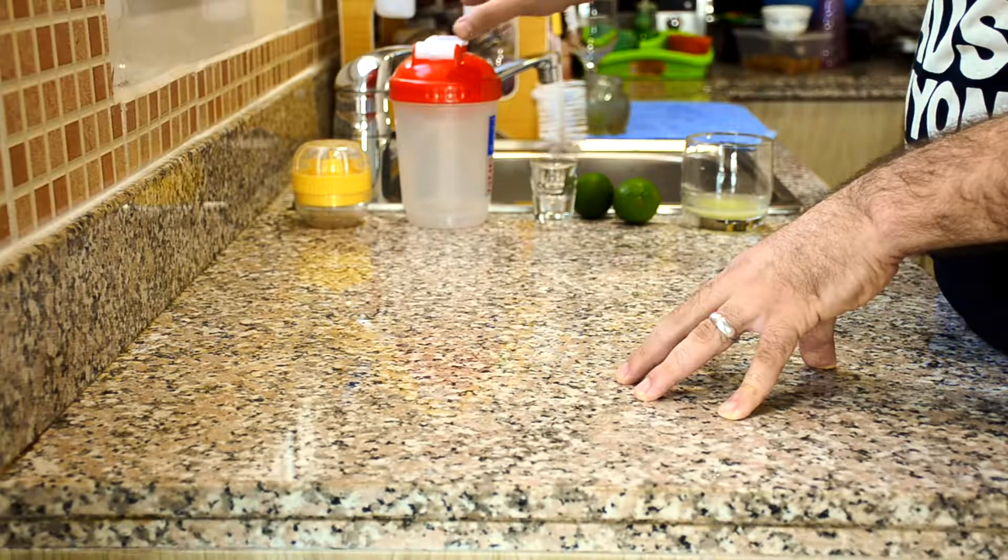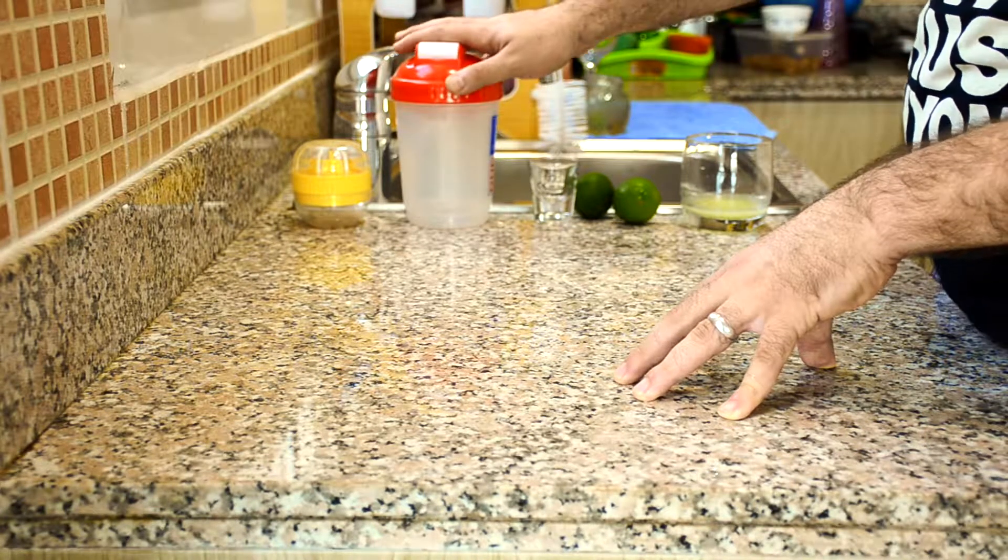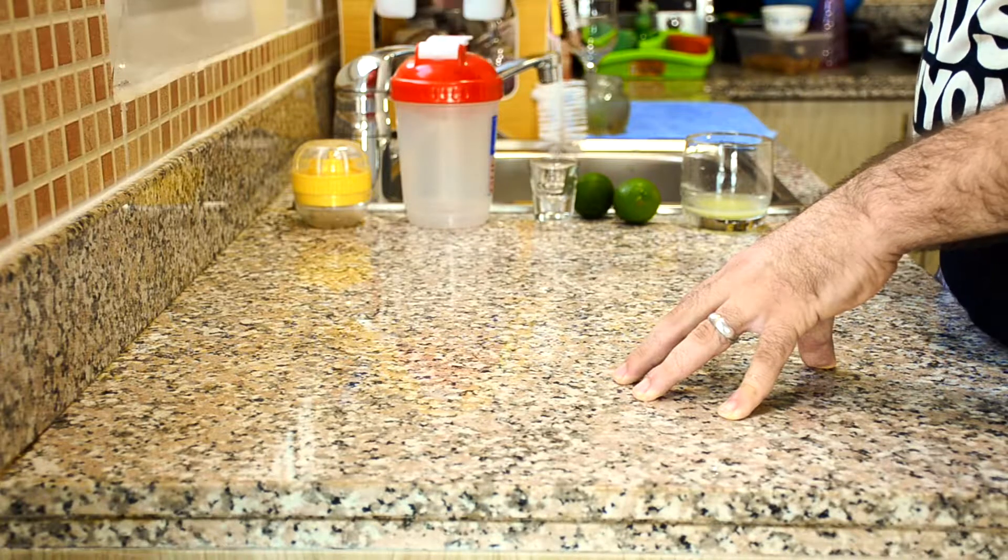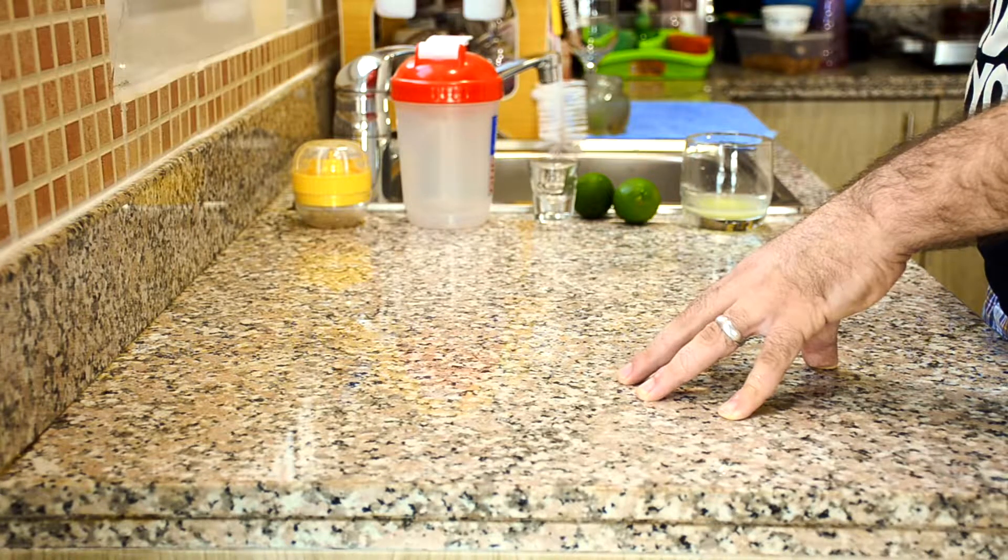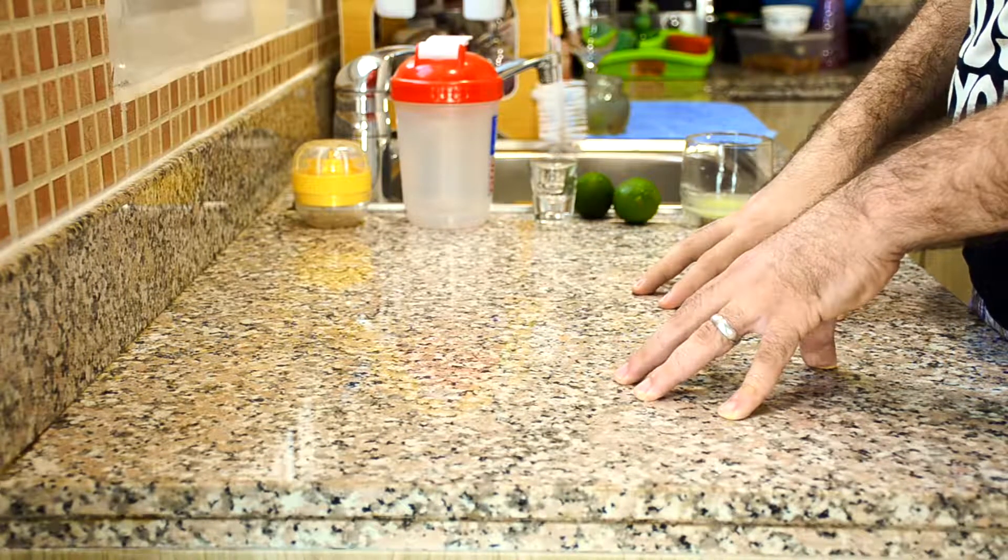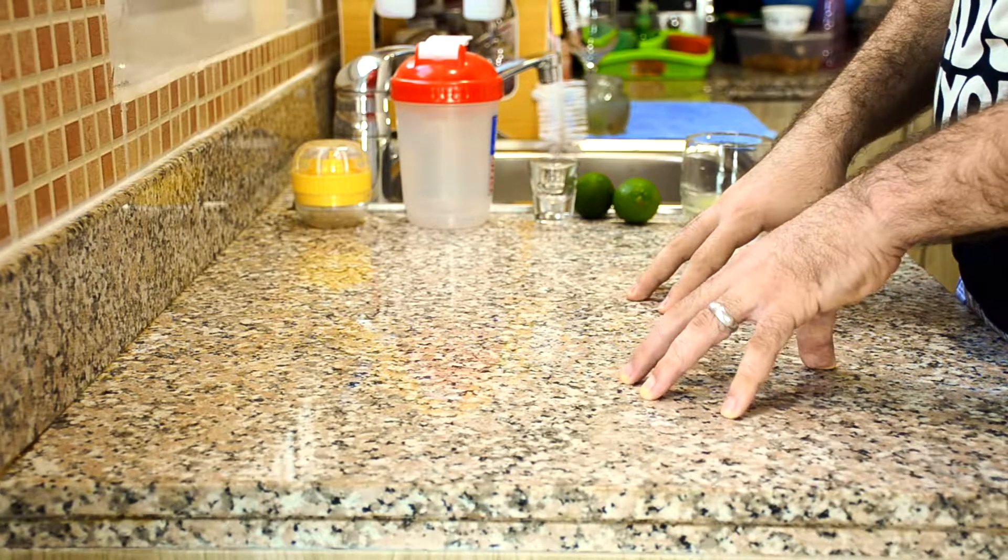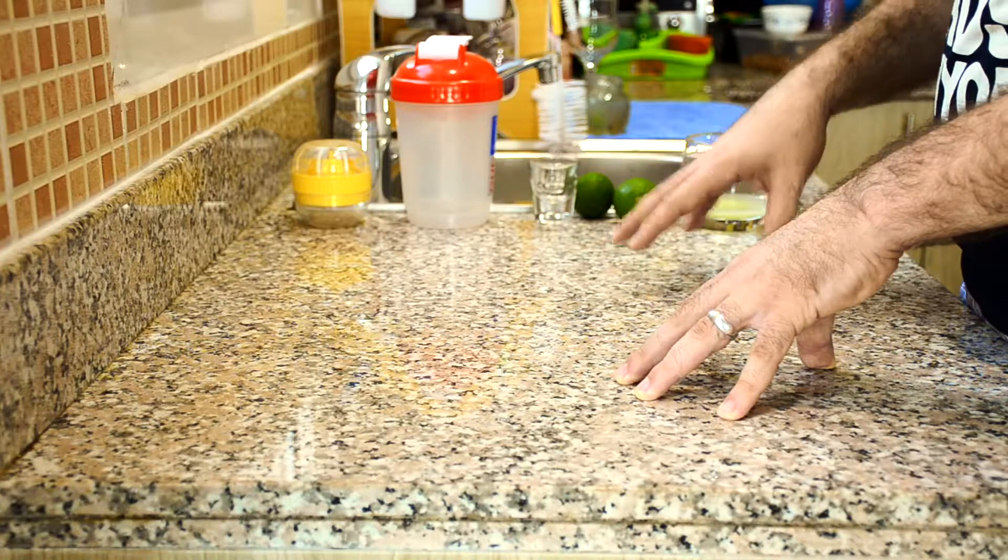Today we will be learning how to make the daiquiri mocktail. It's very simple. We're going to start with the following: lime juice, sugar syrup, and of course the usual cocktail tools.